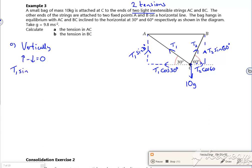We've got T1 sin 30 going up, and we've got T2 sin 60 going up. Minus going down, which is just 10G, which is 10 lots of 9.8. That's equal to zero.